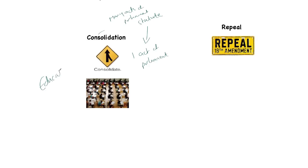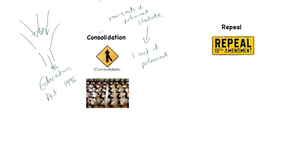A good example of consolidation — which is why we've got students sitting exams — was the Education Act of 1996. It acts like a funnel: lots of statute going in and one Act of Parliament coming out — the Education Act. It does require constant updating, partly due to judges and the government adding or interpreting the law soon after it comes into effect. But nevertheless, the consolidation element brings all the Acts of Parliament on a particular area into one single Act.